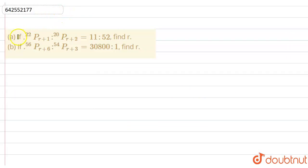Hello everyone, so the question given is, if 22PR plus 1 raised to 20PR plus 2 is equal to 11 ratio of 52, find the value of R. So, let's find the value of R for first question, then we'll find the value of second question.